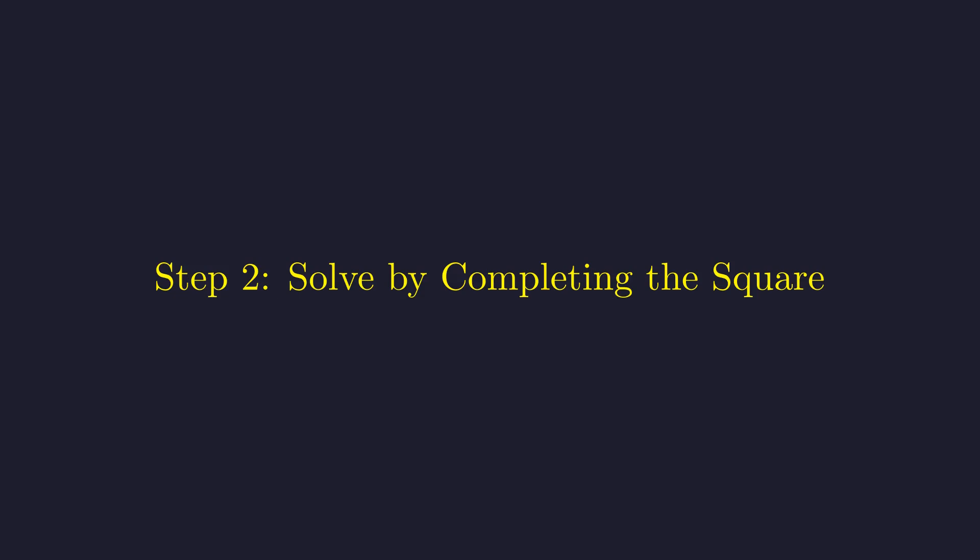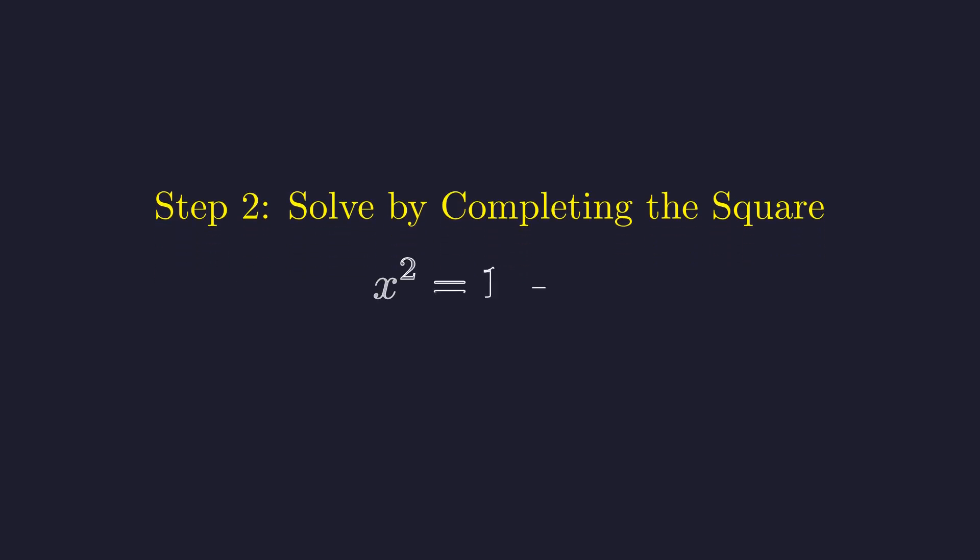We could throw the quadratic formula at this, but let me show you a more elegant approach using a technique called completing the square. First step, let's get rid of that square root by squaring both sides. Now, let's rearrange this to set up for completing the square.